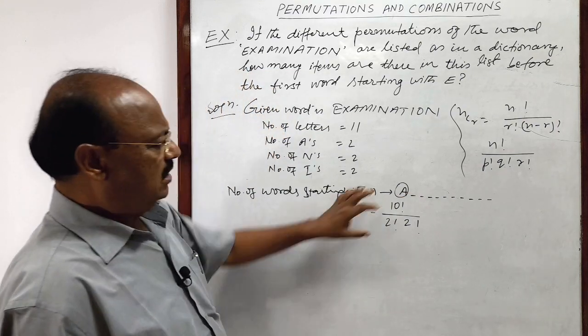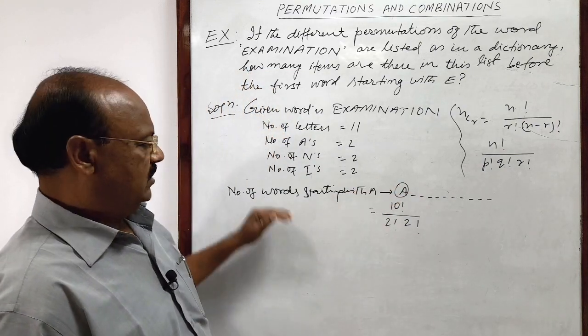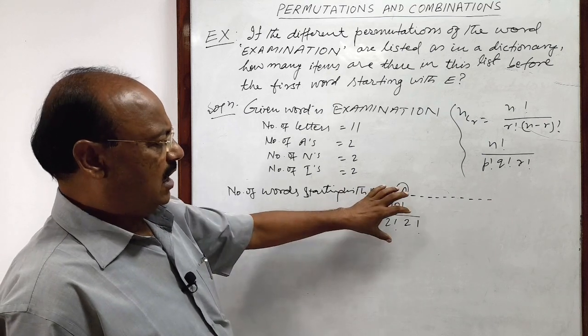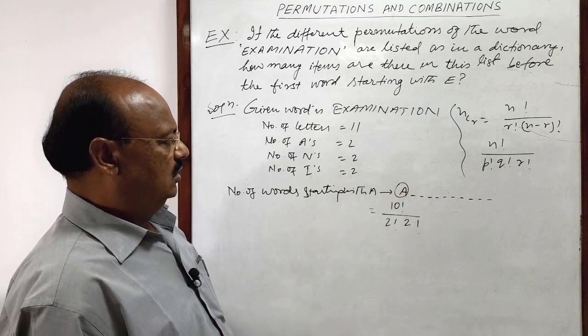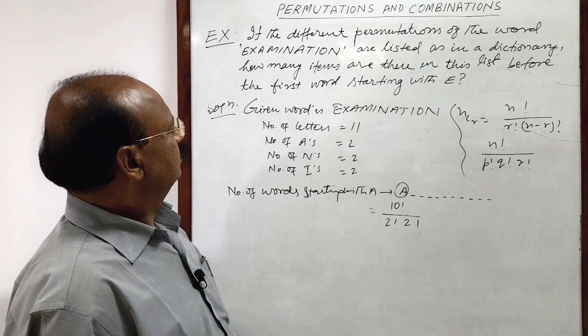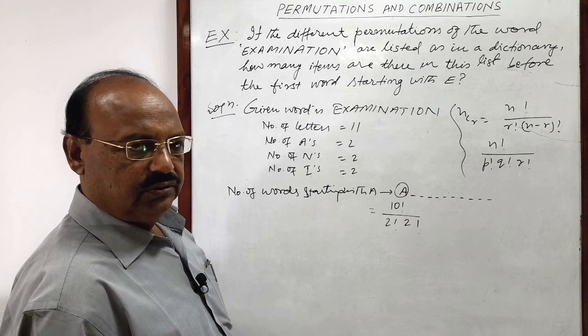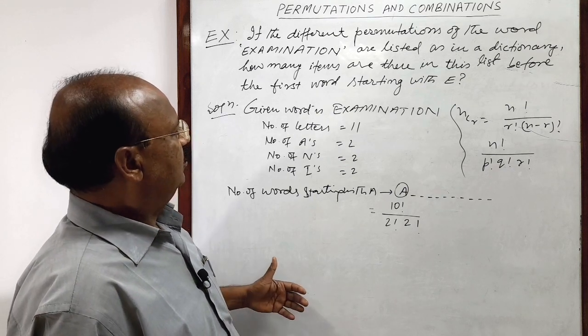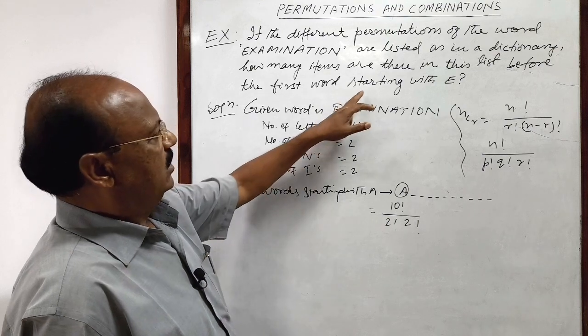So these are the words, number of words we are calculating here. So these are the words which are found in a dictionary before starting with E.